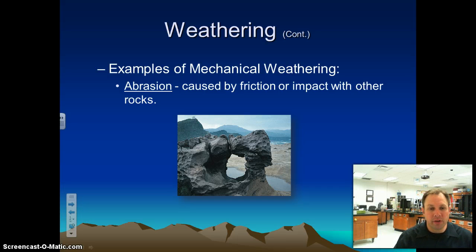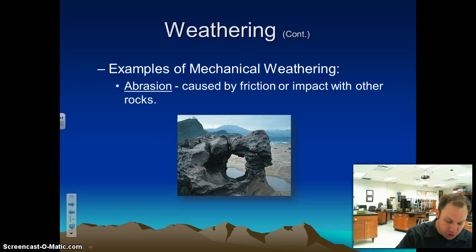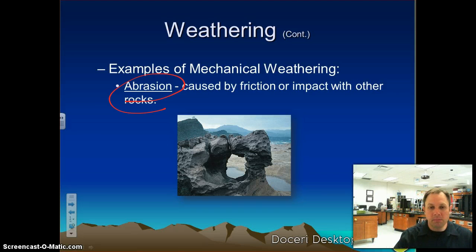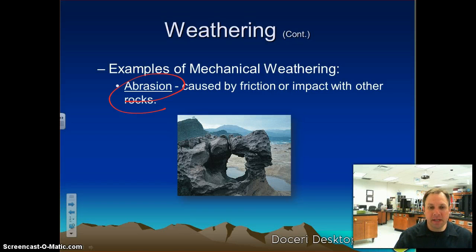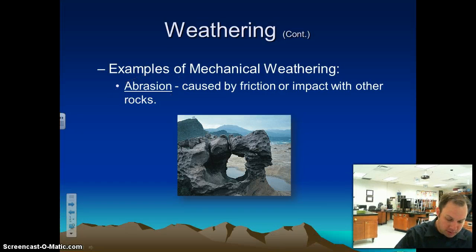Examples of mechanical weathering: the first is called abrasion, caused by the friction of the wind. Wind blowing past rocks and blowing sand at rocks — that sand beating rock into other rock, breaking it down; water splashing up against rock — that's all abrasion. Wind and water breaking down rocks. Abrasion means rubbing up against something.